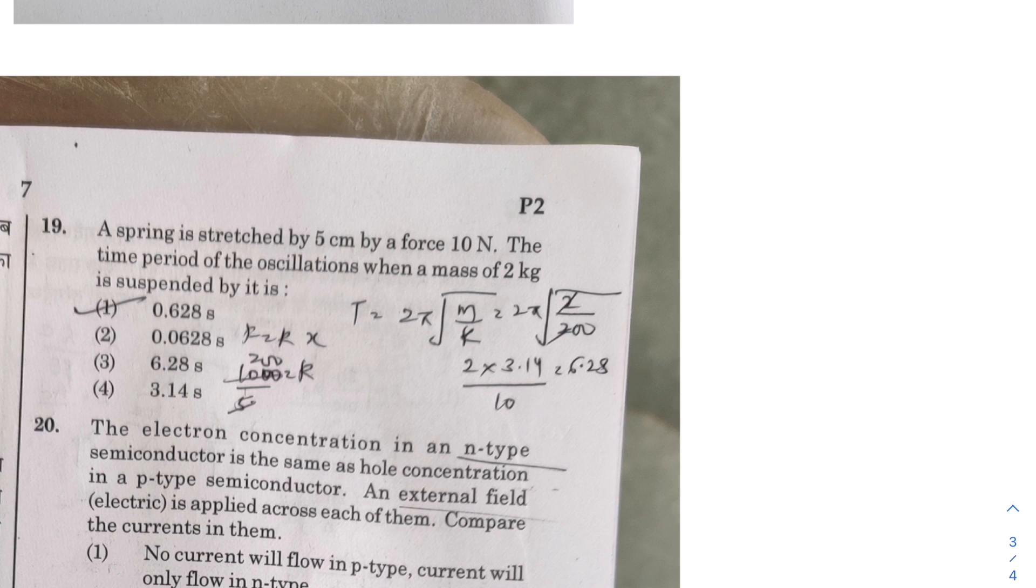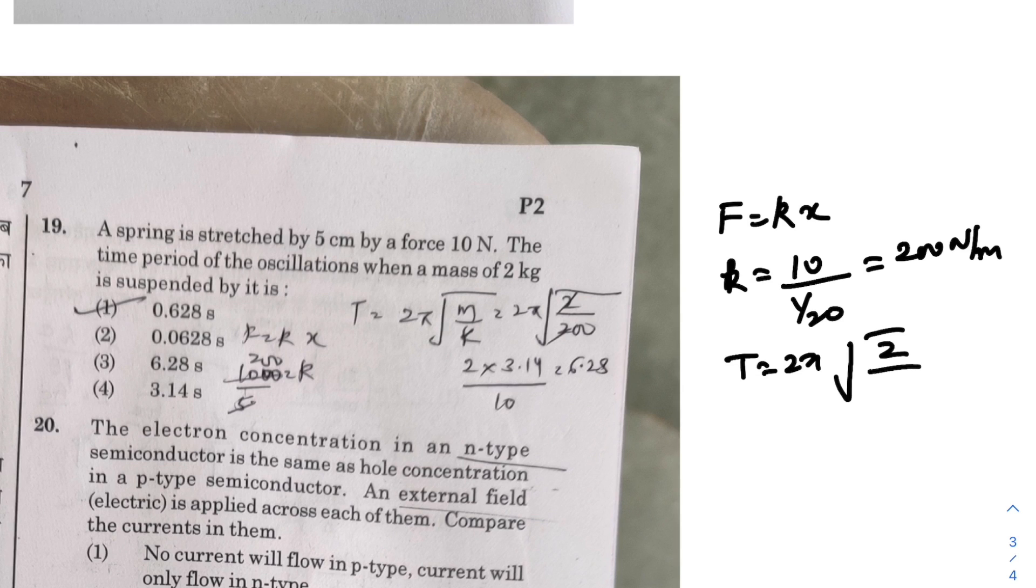Problem 19: The spring is stretched by 5 centimeter by a force of 10 Newton. The time period of the oscillations when a mass of 2 kg is suspended by it is - okay. So F equals kx, so the value of k is 10 over 1 by 20. So it would be 200 Newton per meter.